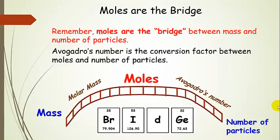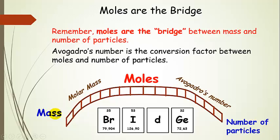Here's just a little summary slide to remind you that moles are the bridge. Here's our mass, here's our number of particles. To go in either direction — from number of particles to mass, or from mass to number of particles — we always have to go through moles. We're going to see this in stoichiometry also: mole ratios are extremely important, essential, and central to being able to solve the problem.